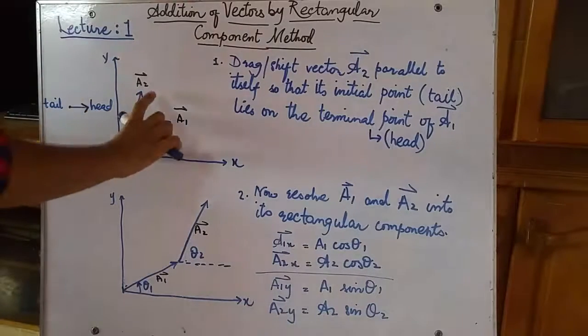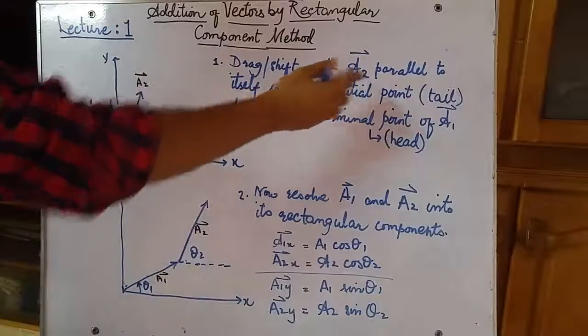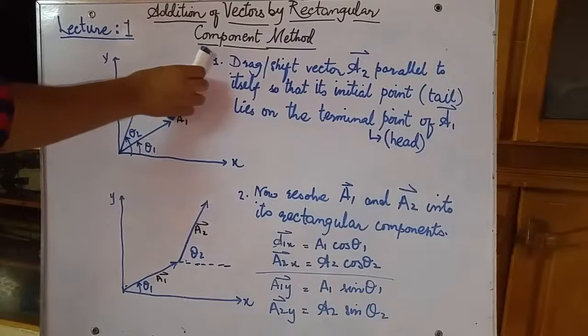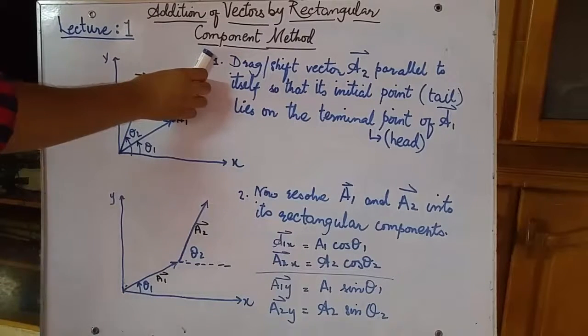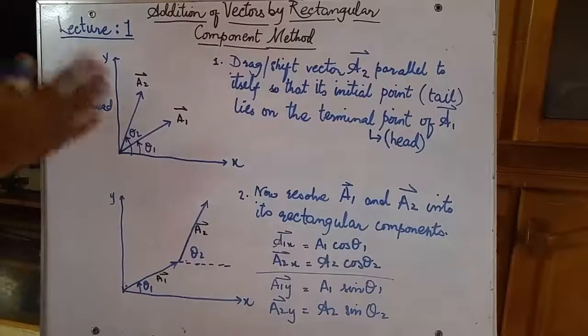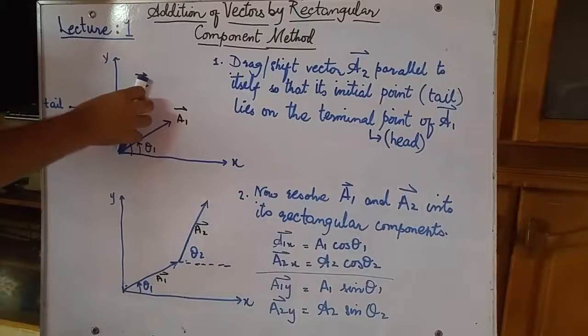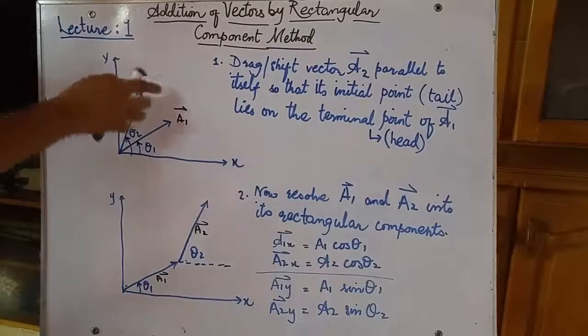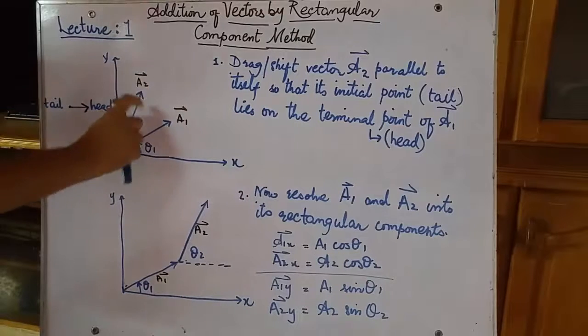And that is, we need to shift vector A2, drag vector A2 parallel to itself, such that its initial point ends at the head of the first vector. First of all, let's think: what is parallel? By saying moving it or dragging it parallel to itself, we need to fix the angle of A2. We cannot change the angle of A2 vector from the x-axis.